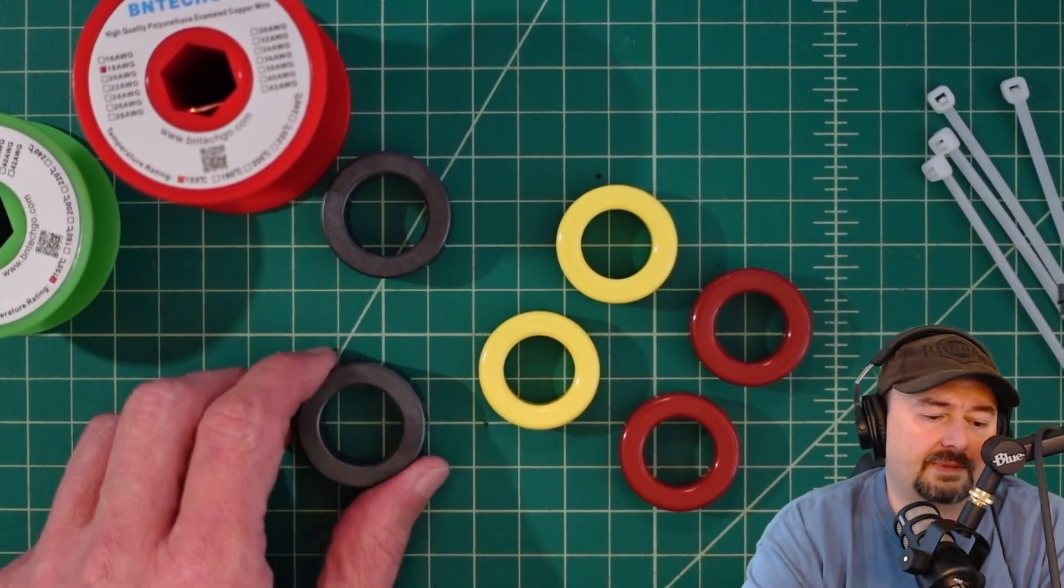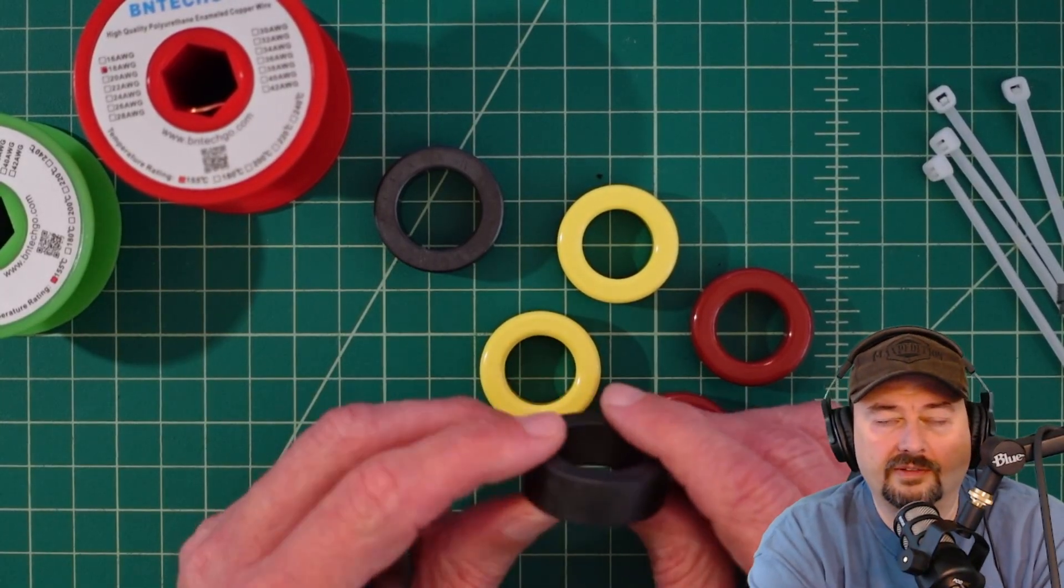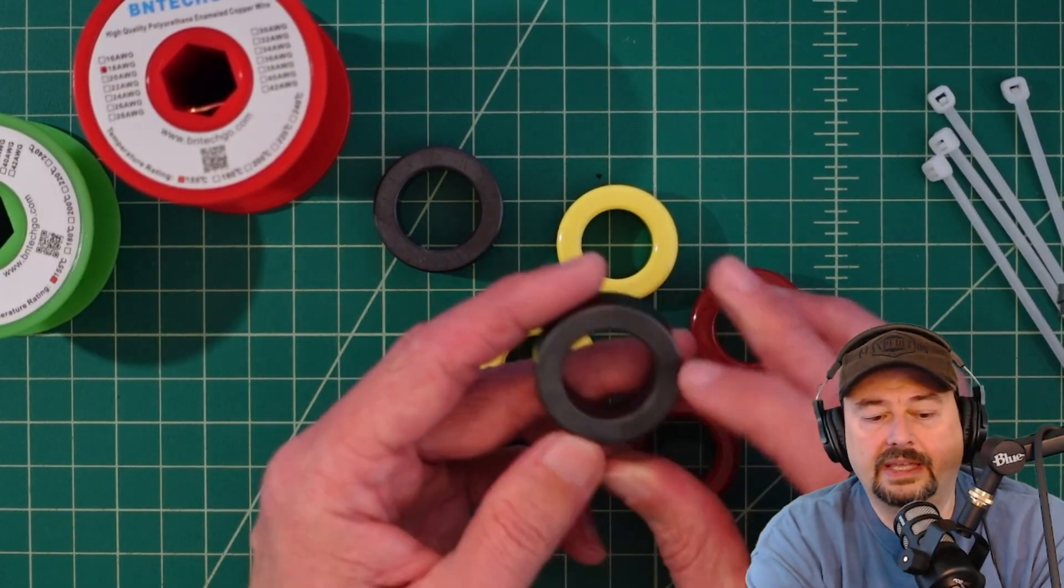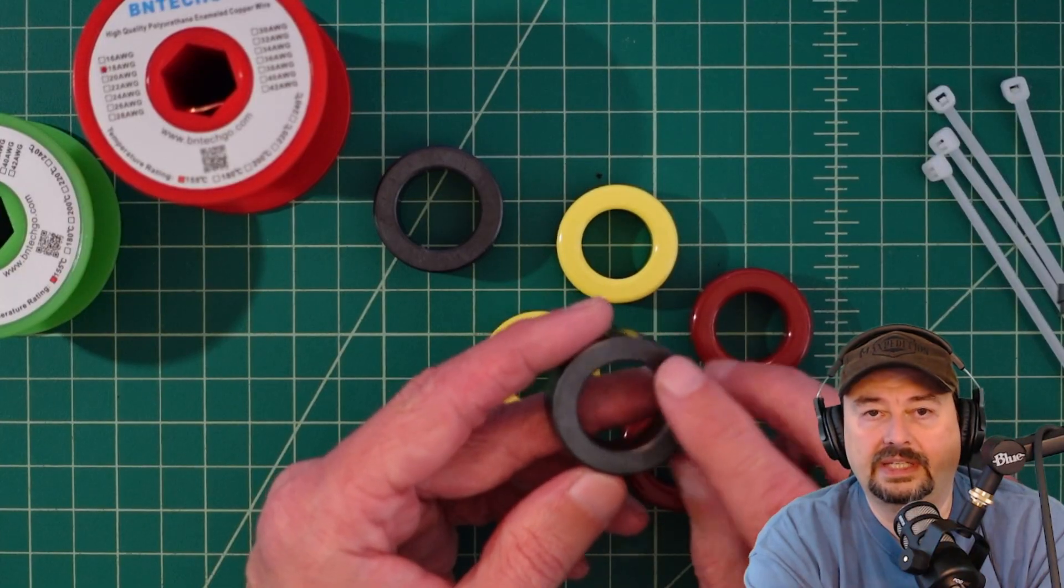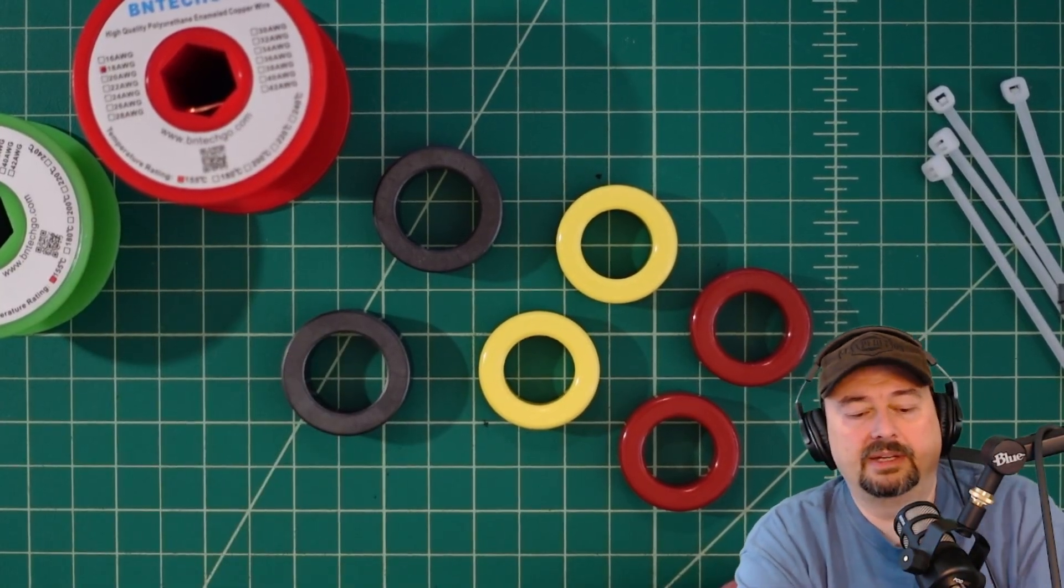This is an FT-140, which means a ferrite toroidal core that is 1.4 inches across in diameter. This is a mix 43 which is a pretty good broadbanded ferrite core.